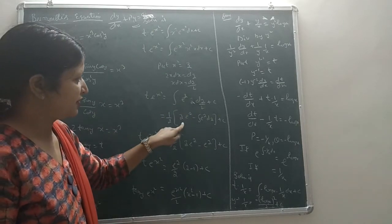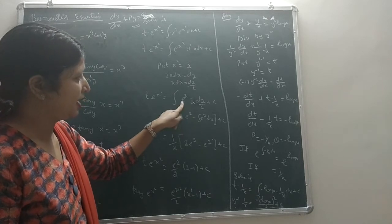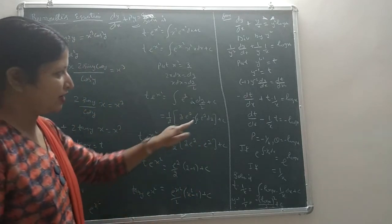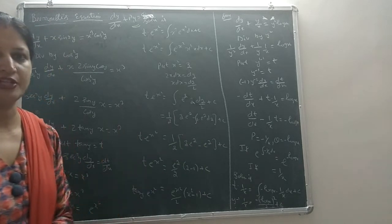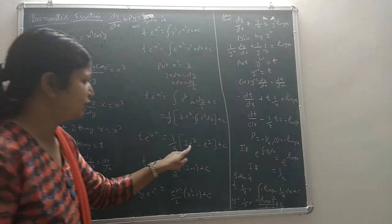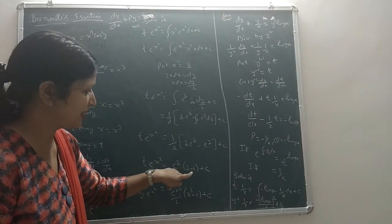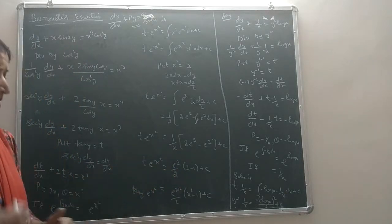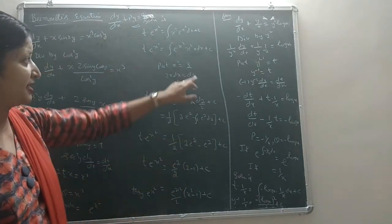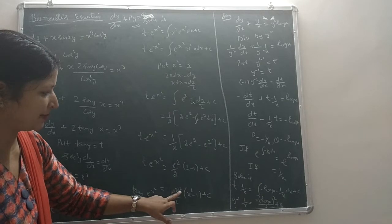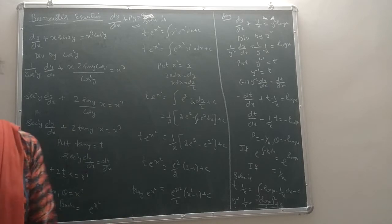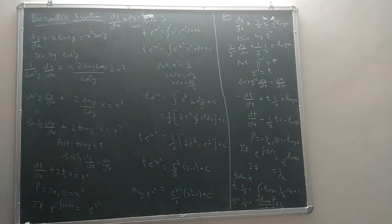We integrate z·e^z by parts: first function times integral of second, minus integral of (derivative of first times integral of second). This gives z·e^z minus e^z. Both terms share a common e^z factor, giving us (z - 1)·e^z. This yields our required solution.